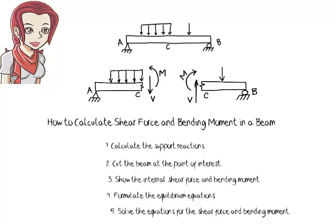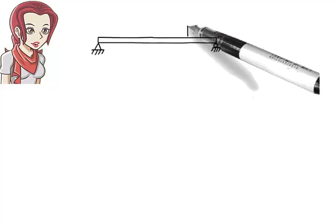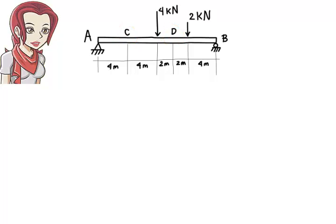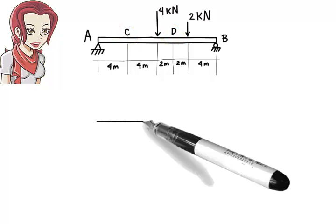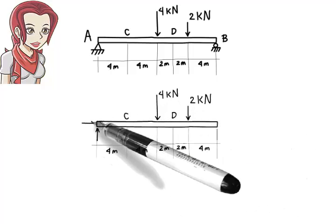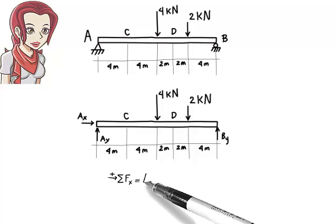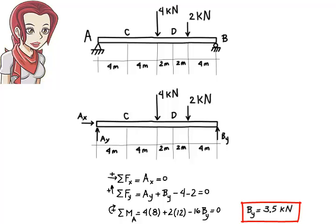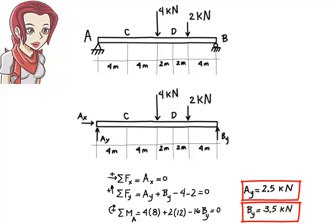Let's illustrate this process using an example. Suppose we have a simply supported beam subjected to two concentrated loads. We wish to determine shear and moment at points C and D. Let's start by calculating the support reactions. Here is the beam's free body diagram and the equilibrium equations. From the moment equation we can calculate BY equals 3.5. From the force equation we get AY equals 2.5, and AX equals 0. Here are the results shown graphically on the beam.